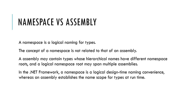What is the difference between a namespace and an assembly? A namespace is a logical container which holds all the types. The concept of namespace is not directly related to an assembly. An assembly may contain types which have different namespace routes hierarchically. The logical namespace route may span multiple assemblies. In the .NET Framework, a namespace is a logical design-time naming convenience, whereas an assembly establishes the name scope for types at runtime.